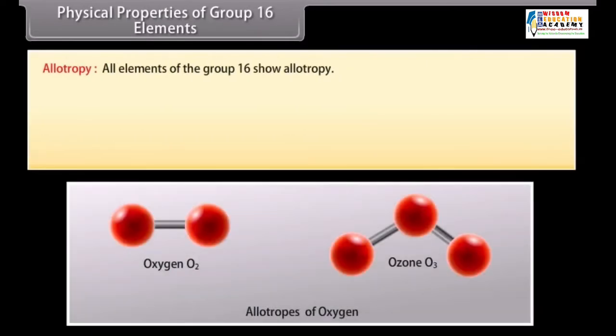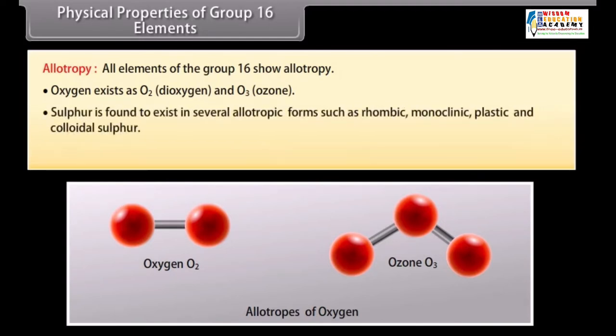Allotropy. All elements of group 16 show allotropy. Oxygen exists as O2 and O3. Sulfur is found to exist in several allotropic forms such as rhombic, monoclinic, plastic and colloidal sulfur.